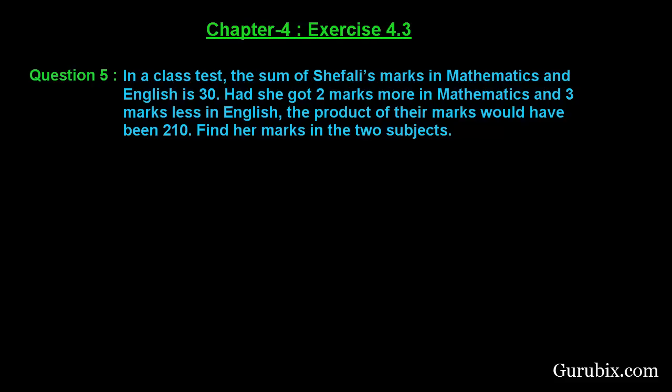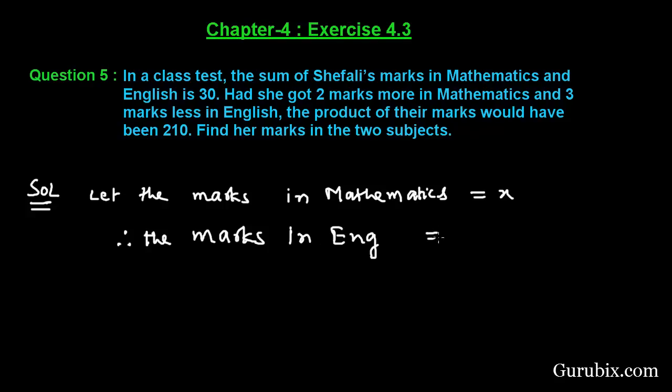This is a very interesting question, let us solve it. We are given that the sum of Shefali's marks in mathematics and English is 30. So, if we let the marks in mathematics be x, therefore the marks in English would be 30 minus x.